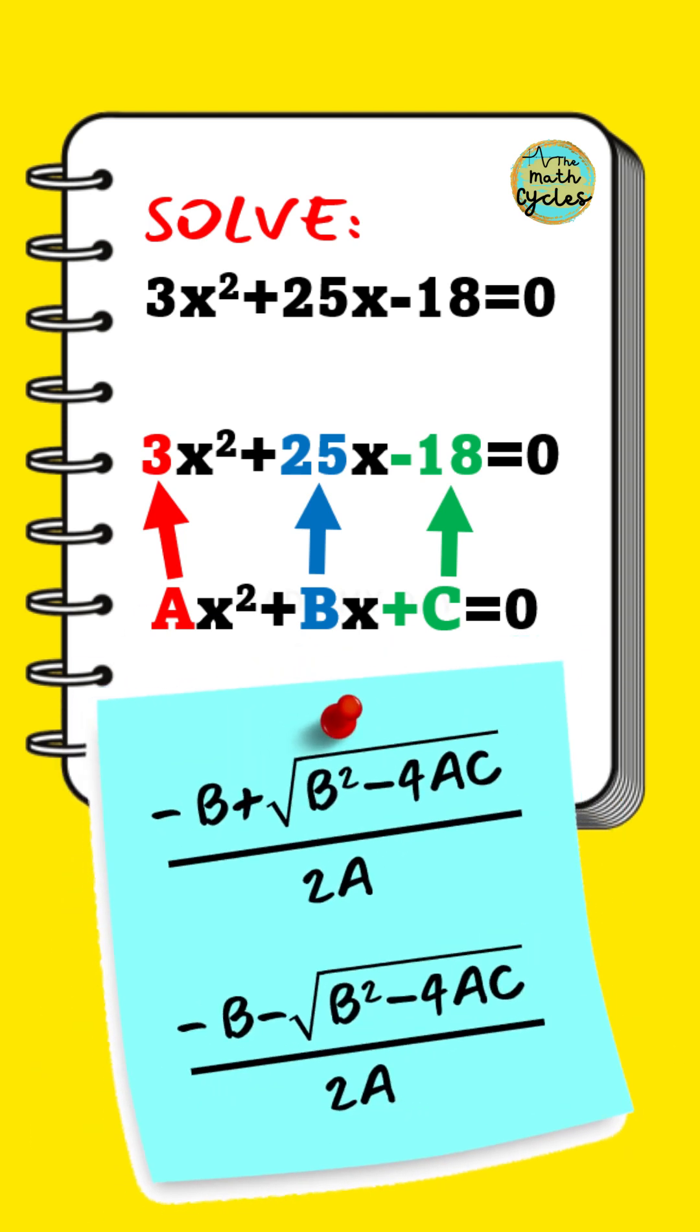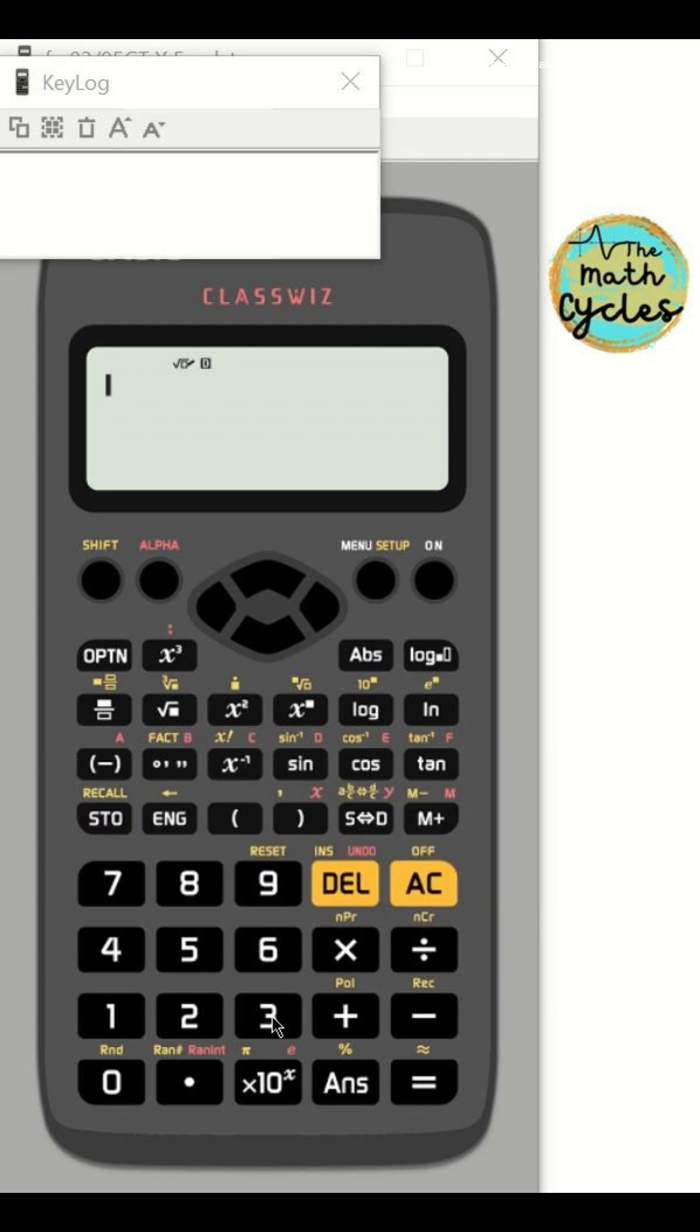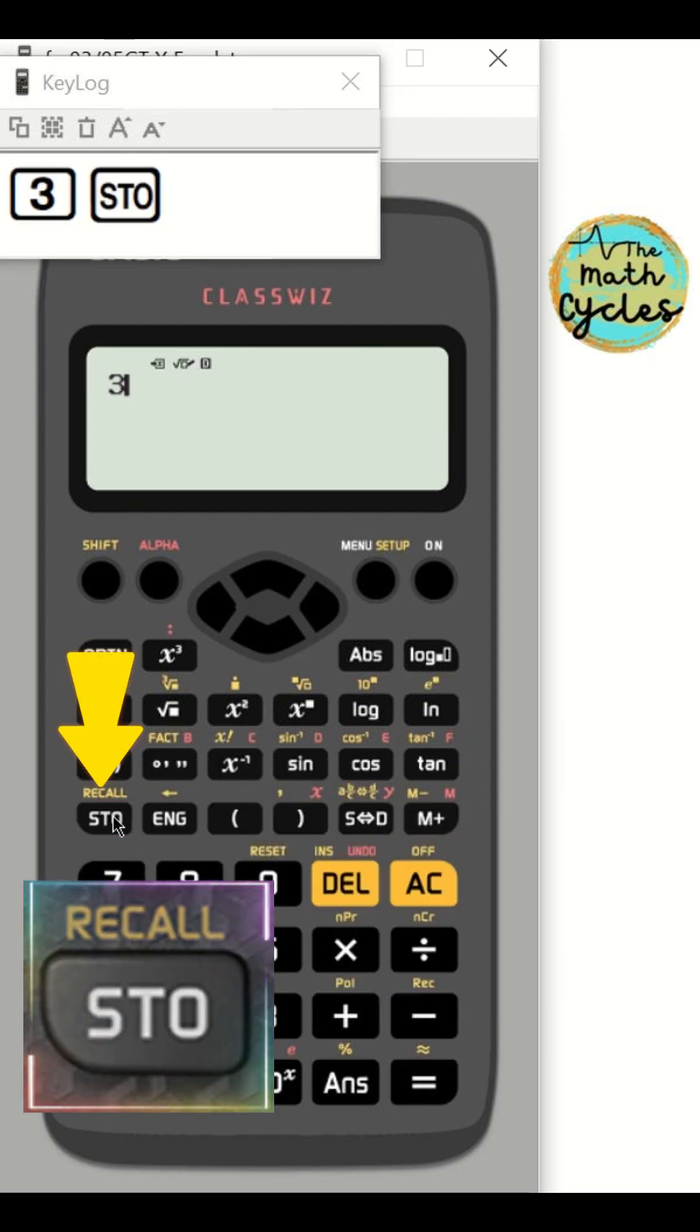And here are the rules to find the roots. First, store the value of A, which is 3. Click 3, store key, then this key.